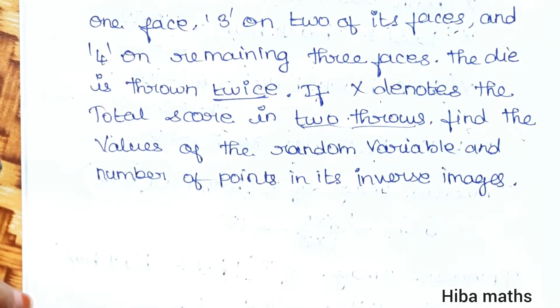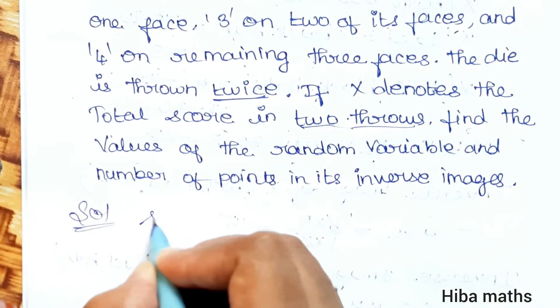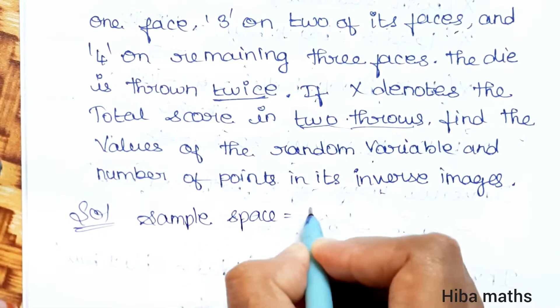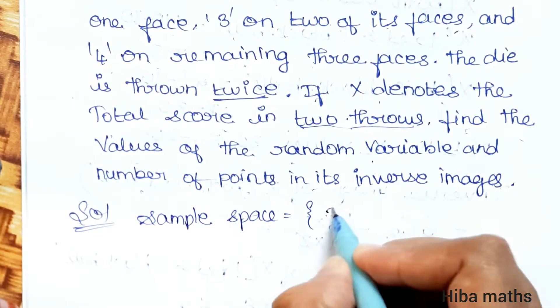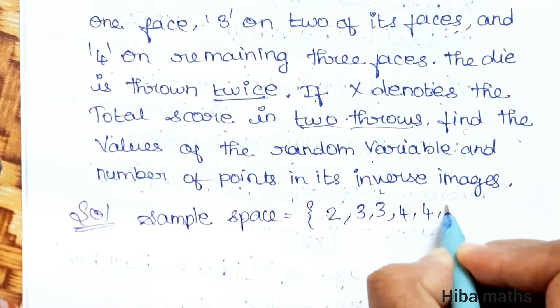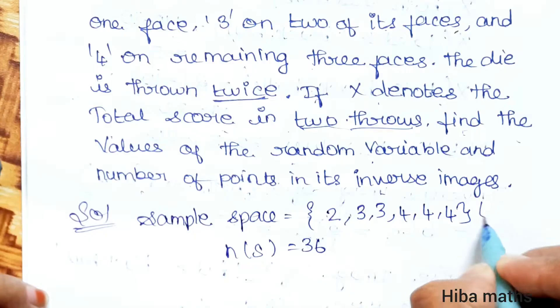So X value and inverse image. In the solution, we have sample space. So first, we have die with numbers 2, 3, 3, 4, 4, 4. So n of S is 36, since the die is thrown twice.